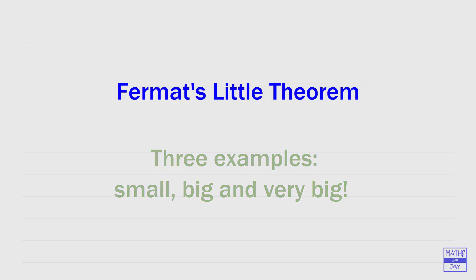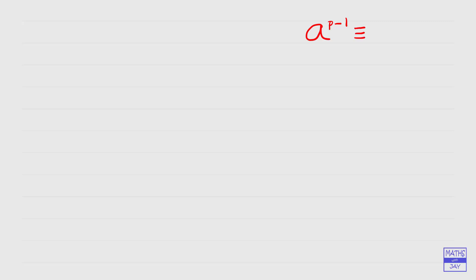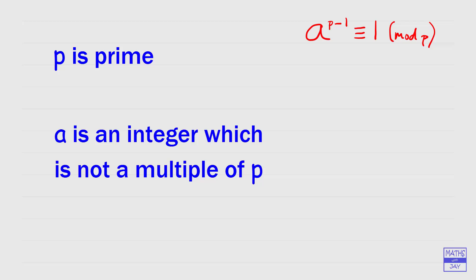So let's have a look at the theorem. It looks pretty simple. If we've got an integer a and we raise it to a power related to the prime number p — specifically p minus 1 — then Fermat's Little Theorem tells us that that number is congruent to 1, working in modulo p. So another way of looking at this is that when we divide a to the power of p minus 1 by p, we get a remainder of 1. This works for any prime p and any integer a, so long as a isn't divisible by p.